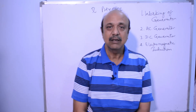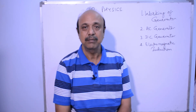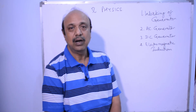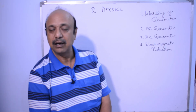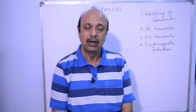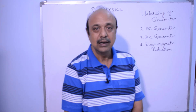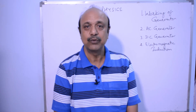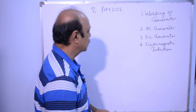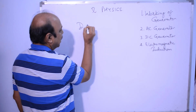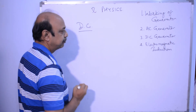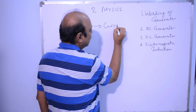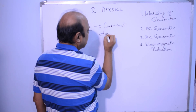In Class 10, we are studying the chapter on magnetism. Till now we have seen Fleming's right-hand rule and the working of motors with Fleming's left-hand rule. Today we are going to discuss alternating current and direct current again. Direct current, or DC, is a current where the current does not change its direction.